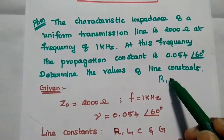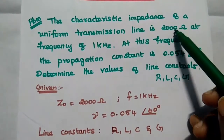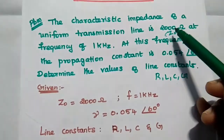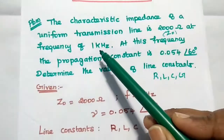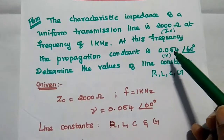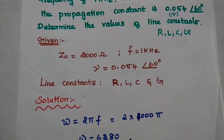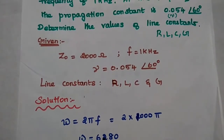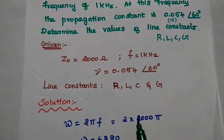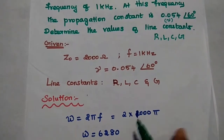We are going to find out the values of R, L, C, G. The given data: characteristics impedance Z naught is 2000 ohm, frequency F is equal to 1 kilohertz, and propagation constant gamma is equal to 0.054 with angle 60 degrees. In the solution part, first we find omega equal to 2 pi F. F is 1 kilohertz, that is 1000, so 2 into 1000 into pi gives 6280.